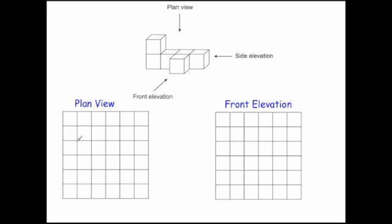So let's draw the plan view: four squares in a row, and then that one square coming down. For the front view, if you looked at this shape from the front, you would see four squares along the bottom and one square going up on the left-hand side. So it would look like that — and that's a typical exam question.